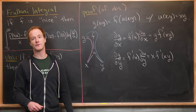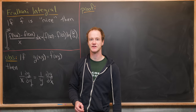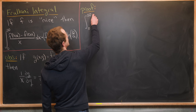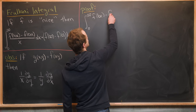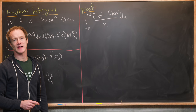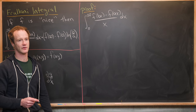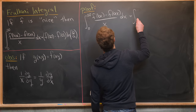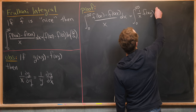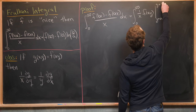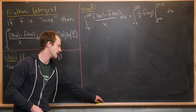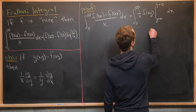Now that we've established this observation as a tool, we're ready to prove the main result. We start with the integral from zero to infinity of f(bx) minus f(ax) over x dx. Looking at the numerator, we can write this as the integral from zero to infinity of (1/x) times f(xy) evaluated from y = a to y = b, times dx.